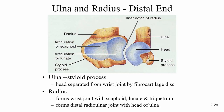At the distal end, the ulna and radius switch relative sizes. The ulna was larger and bulkier at the proximal end (olecranon process) but becomes smaller near the wrist. The radius was smaller at the head but becomes much larger and bulkier near the wrist. The ulna has a styloid process at its distal end.